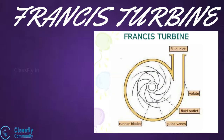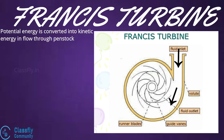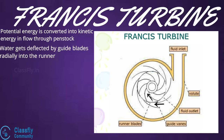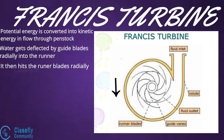Water from the reservoir flows through the penstock and enters the spiral casing. In this process, a part of the water's potential energy is converted into kinetic energy. Water then flows through the guide blades and gets deflected radially into the runner, where it moves over the moving blades in the radial direction and is finally discharged to the tail race via the draft tube.